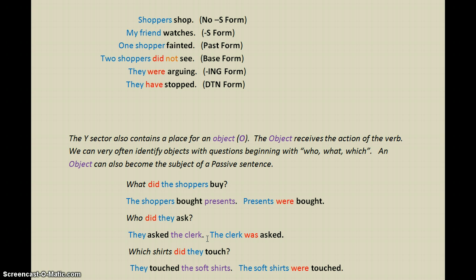If I wanted to, I could take the object and use it in a passive sentence as the subject: 'The clerk was asked.' 'Which shirts did they touch? They touched the soft shirts.' Touched is the verb; the soft shirts is the object — I know it's an object because I could also use it in a passive sentence as the subject: 'The soft shirts were touched.'